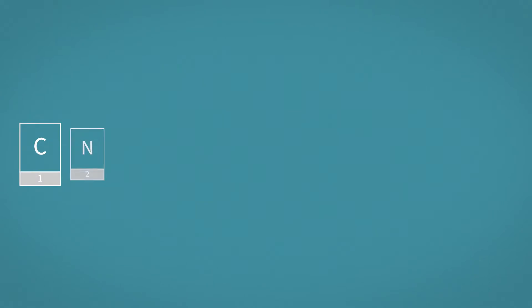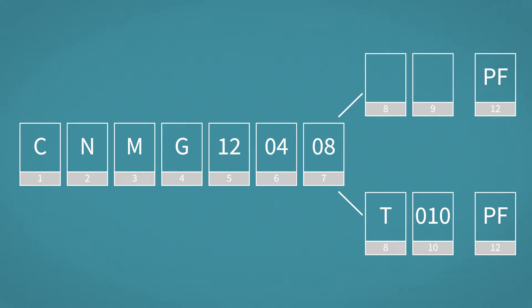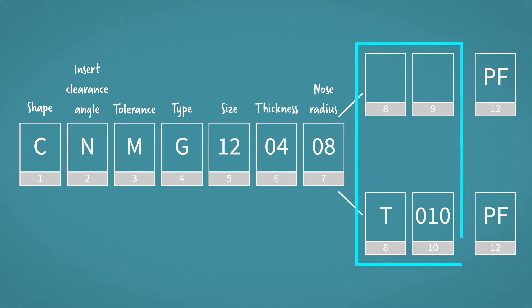Let's start by saying that the standard method identifies inserts with a series of letters and numbers, which, depending on their position, have a precise meaning. These 12 parameters are used to uniquely define our insert. Of these 12 parameters, the first 7 will always be present, while parameters 8, 9, and 10 are additional. Finally, the 12th parameter is for the builder and is usually used to identify the chip breaker geometry.